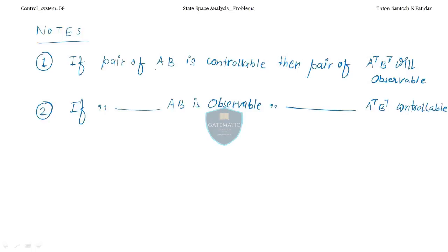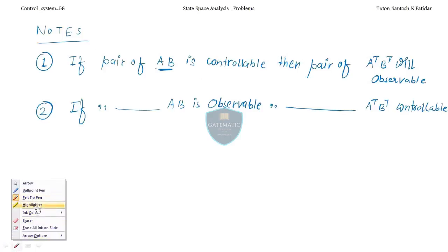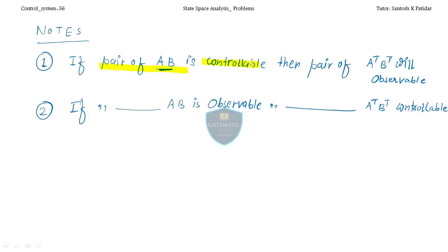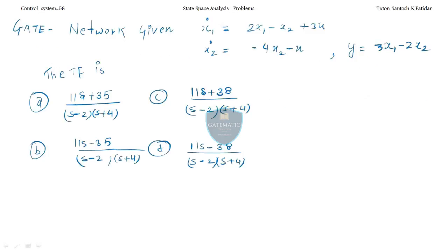Two important duality points: If the pair (A, B) is controllable, then the pair (Aᵀ, Bᵀ) will be observable. And if the pair (A, C) is observable, then (Aᵀ, Cᵀ) will be controllable. Now let's take some GATE problems.